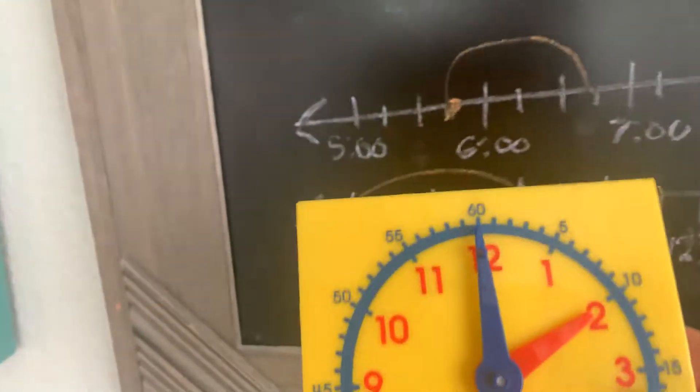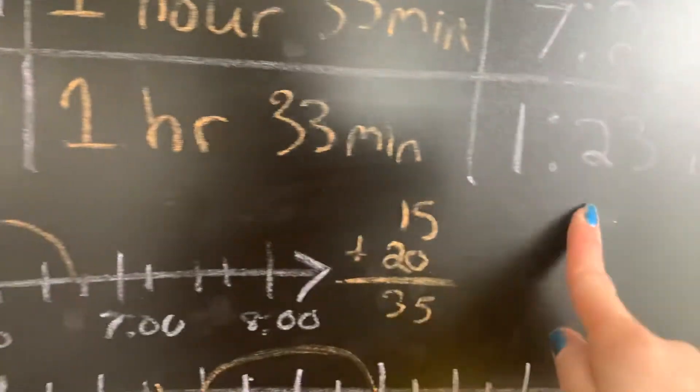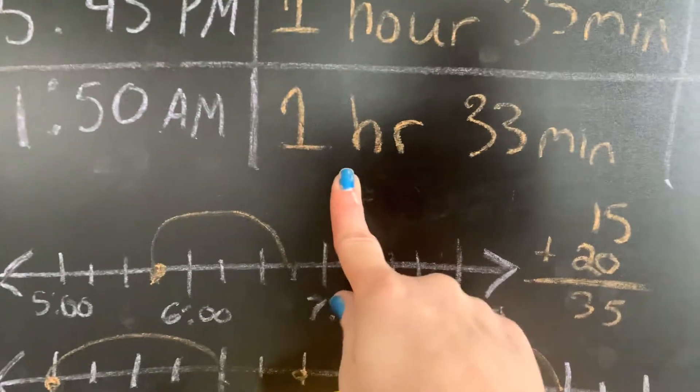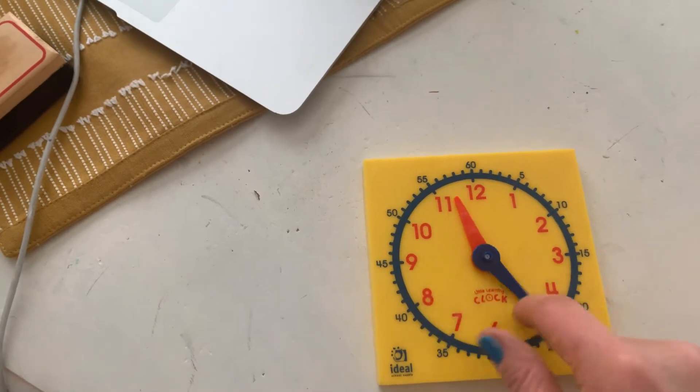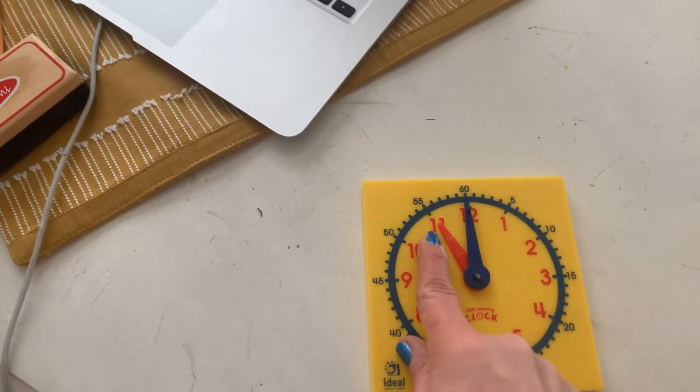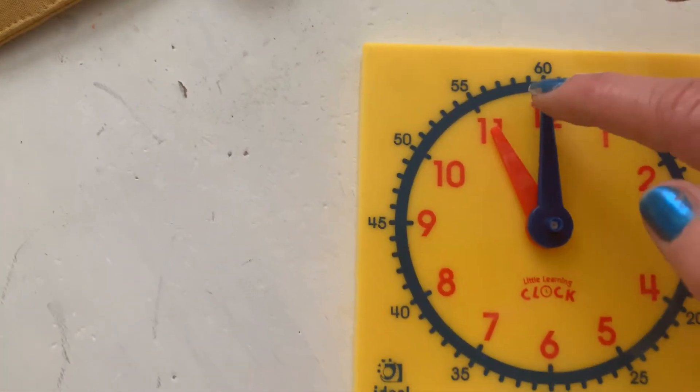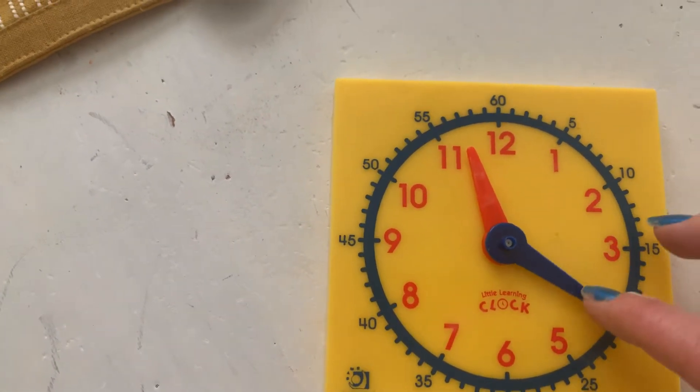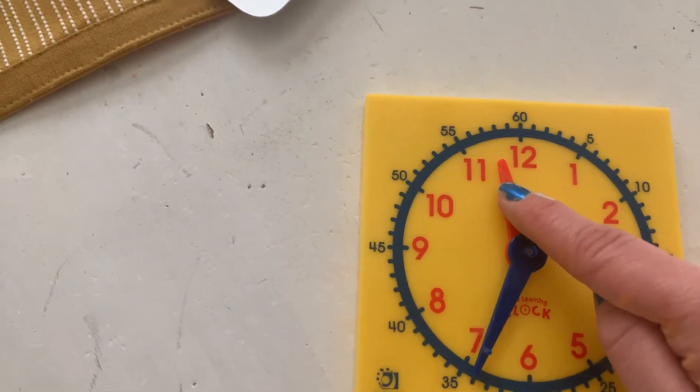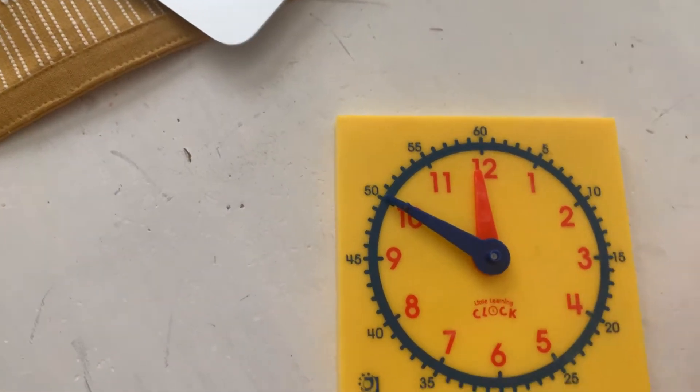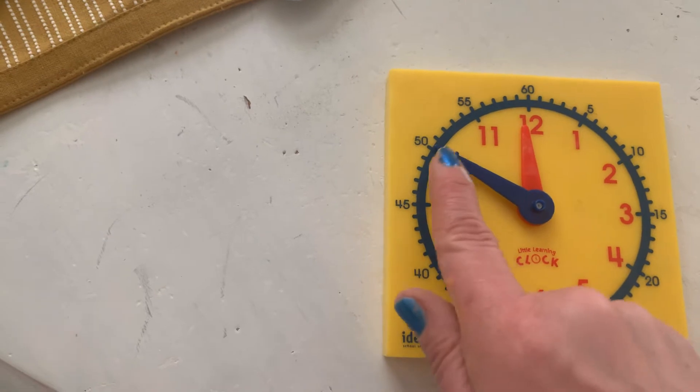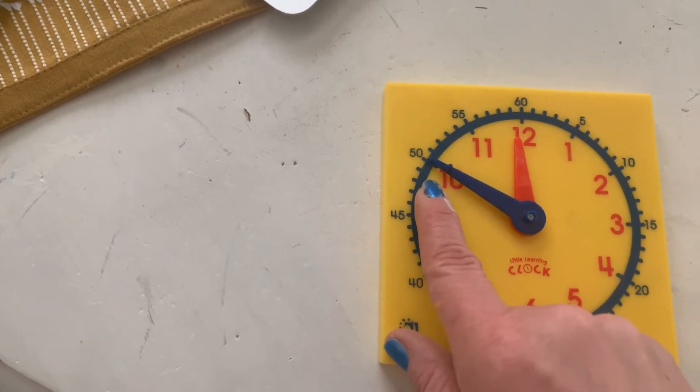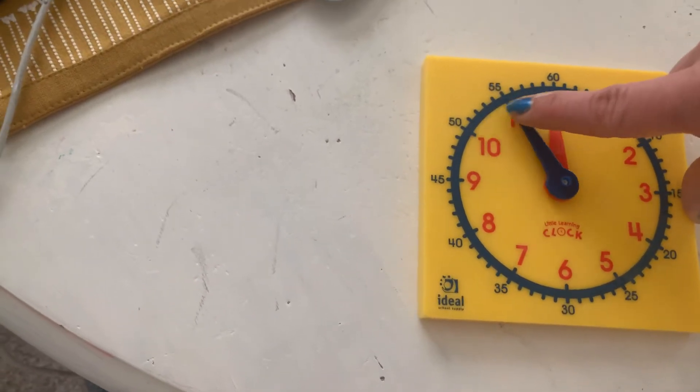And I'm going to use my clock to show you. I want to do 11:50 to 1:23 to prove to you that it really is one hour, 33 minutes. So at 11:50, watch at 11 o'clock, it's exactly, remember the hour hand exactly on 11, but as the minute hand moves around the hour, the red hand, the hour hand gets closer to the next hour. So at 11:50, it's almost 12 o'clock, but it's not 12 o'clock yet. So I want to end at 1:23. There's my 10 minutes.